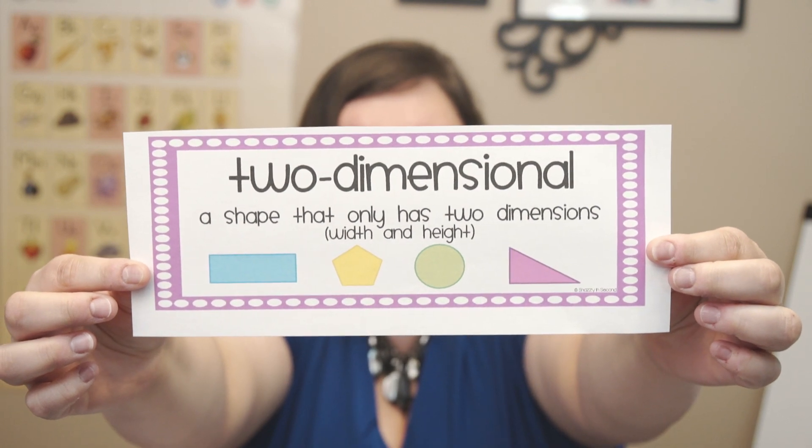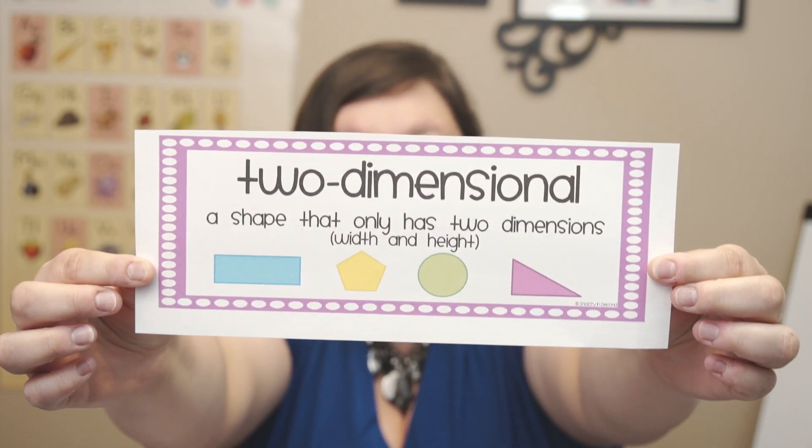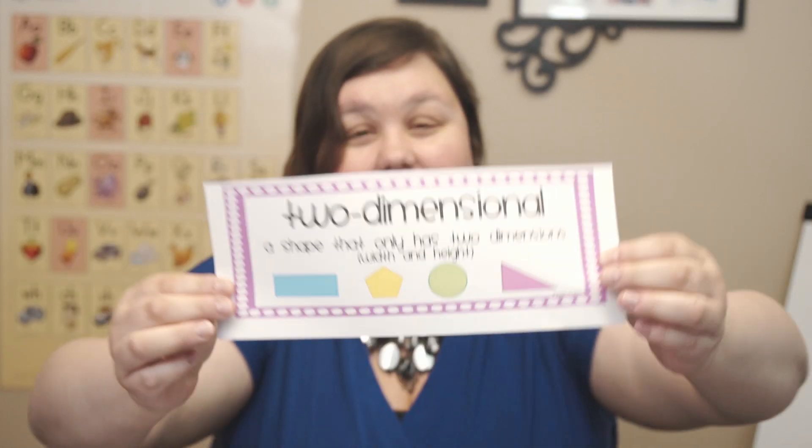Two-dimensional shapes — a shape that only has two dimensions. It has a width and a height. People are three-dimensional, but two-dimensional means it's flat. 2D shapes are flat. 3D shapes are fat. There's a lot of differences. We're going to do 3D shapes in our next video.